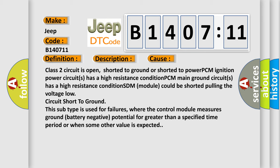This subtype is used for failures where the control module measures ground battery negative potential for greater than a specified time period or when some other value is expected.